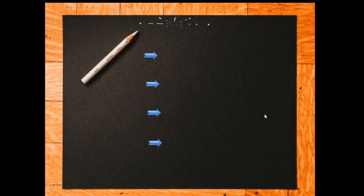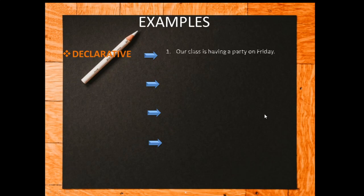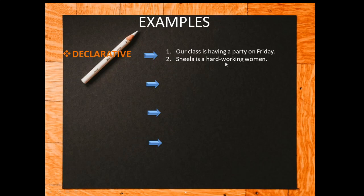Now let us see some examples. Declarative sentence: 'Our class is having a party on Friday.' 'Our class' is the subject, 'is having' is the verb — so subject and verb combination is present. 'A party on Friday' is a phrase attached to it, making it a complete sentence with a capital letter and ending with a full stop. Another example: 'Sheila is a hard working woman.' 'Sheila' is the subject, 'is' is the verb, and 'a hard working woman' is a phrase. When subject and verb are attached to this phrase, it becomes a sentence with complete sense, starting with a capital letter and ending with a full stop. So sentences that state a fact or statement are nothing but declarative sentences.